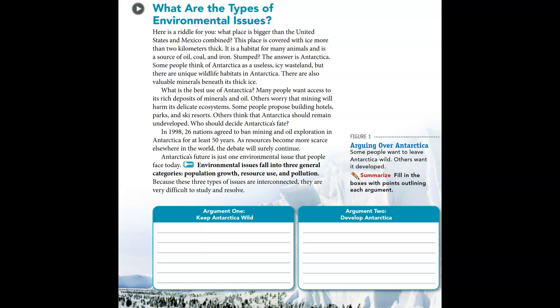Environmental issues fall into three general categories: population growth, resource use, and pollution. Because these three types of issues are interconnected, they are very difficult to study and resolve.